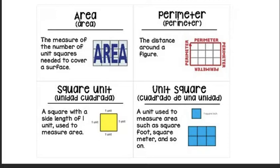The perimeter is the distance around the figure. We've done a lot of work with this already. A square unit is a square with the side length of one unit. When we are finding the perimeter, we're trying to count how many units around the entire shape or figure. Unit square, that's a unit to measure area, such as square foot, square meter, and so on when it's specific. But usually we just say blank unit squares.